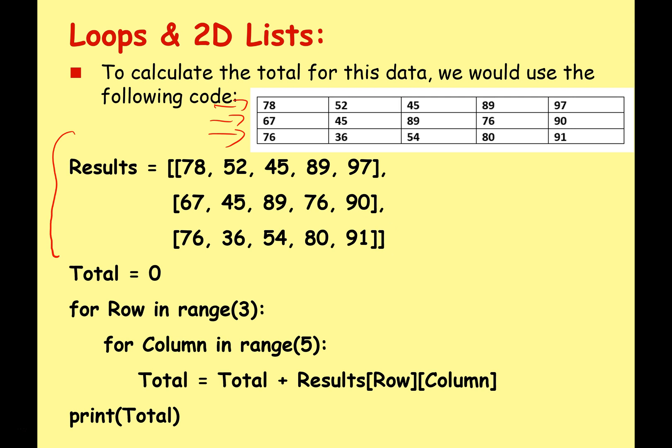I'm going to create a running total of all the numbers, so I set total equals zero. Here's the key part: for row in range three, colon, indented for column in range five, colon, indented again, total equals total plus results row column, and at the end print total. I use range three because there are three rows - zero, one, two - and range five because there are five columns - zero, one, two, three, four.